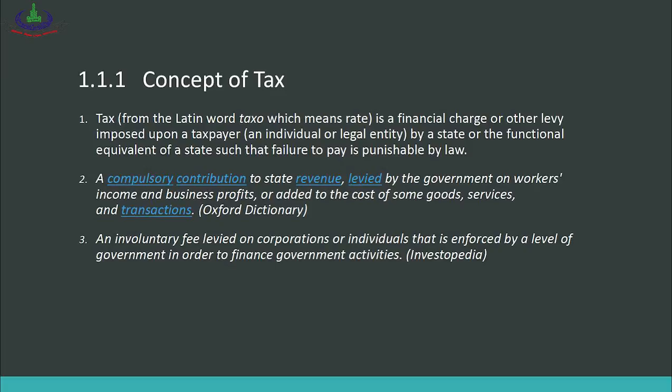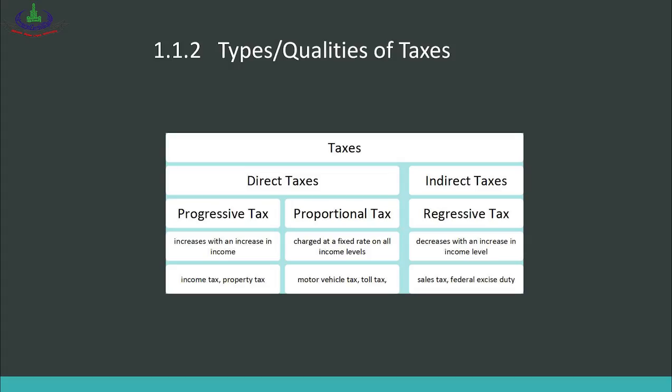A third definition: tax is an involuntary fee levied on corporations or individuals that is enforced by a level of government in order to finance government activities. According to this third definition, tax is fundamentally an involuntary fee — you must pay it, there is no choice or option — which is enforced by the government on corporations and individuals, with the purpose of collecting revenues for government activities and administrative functions.